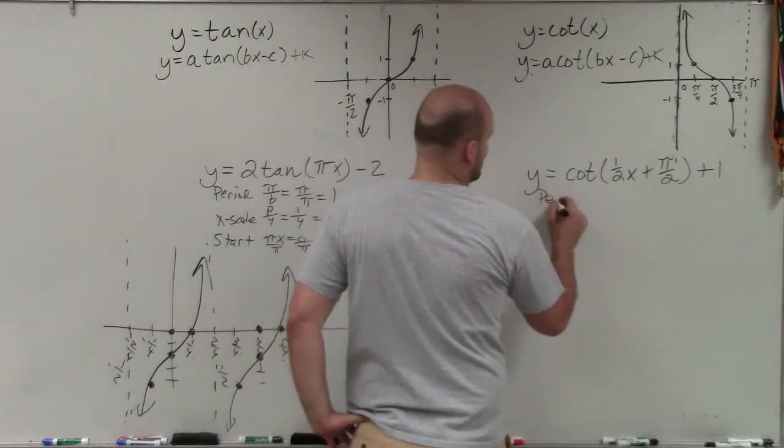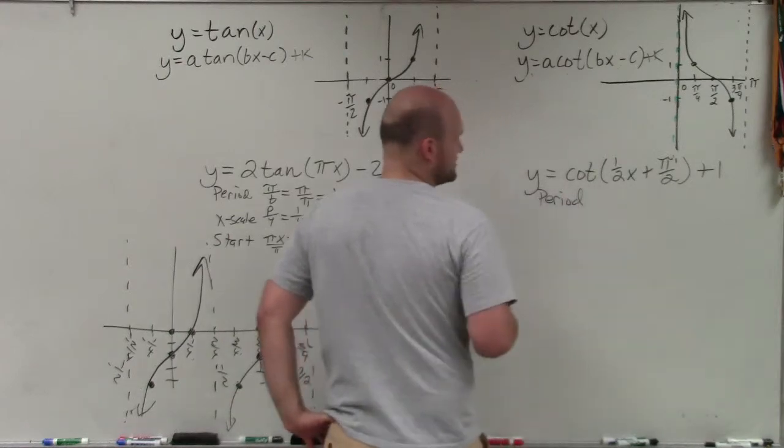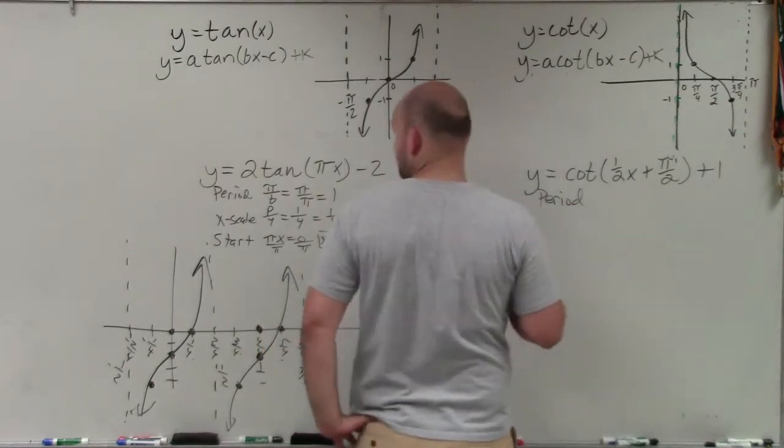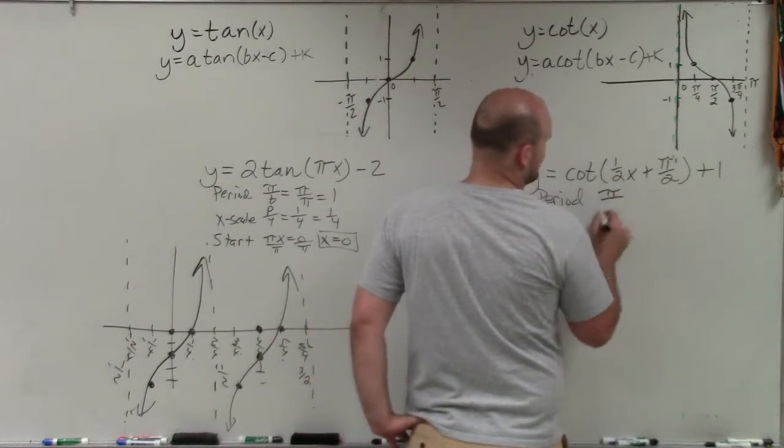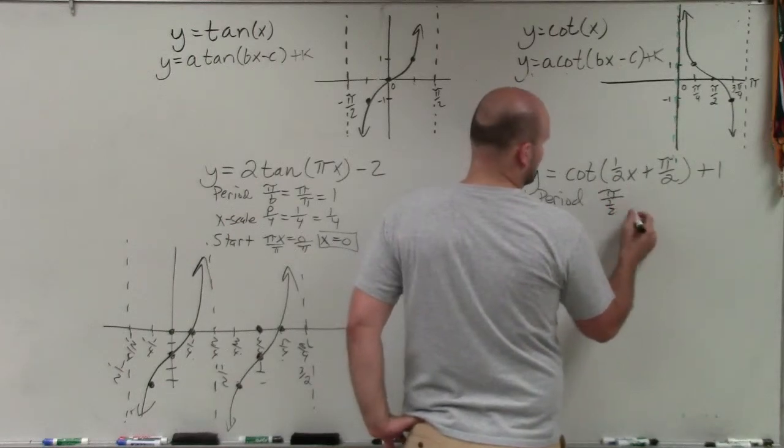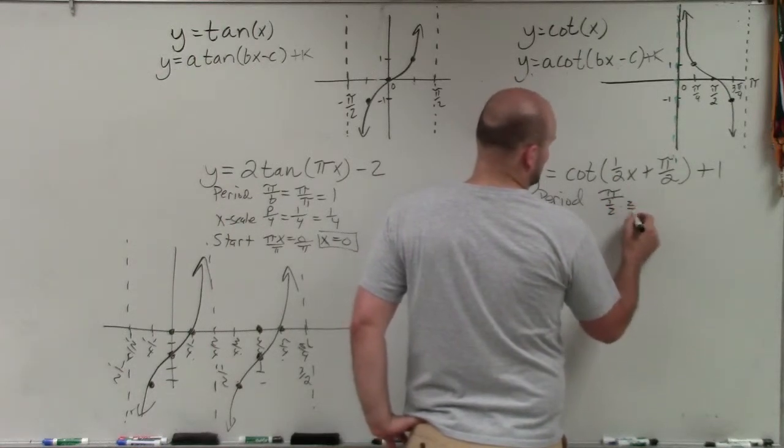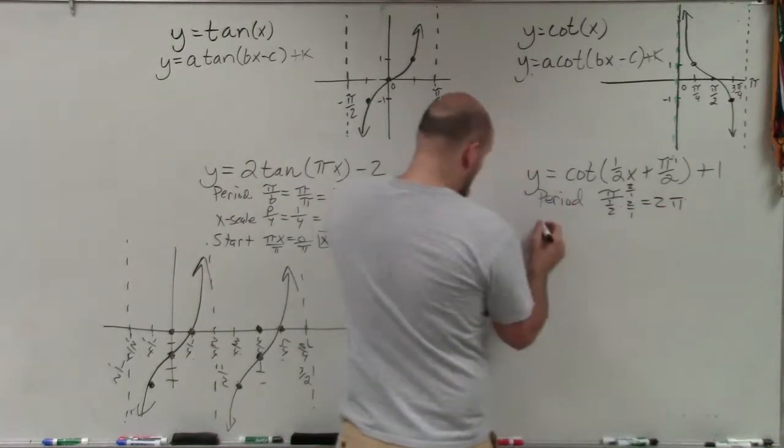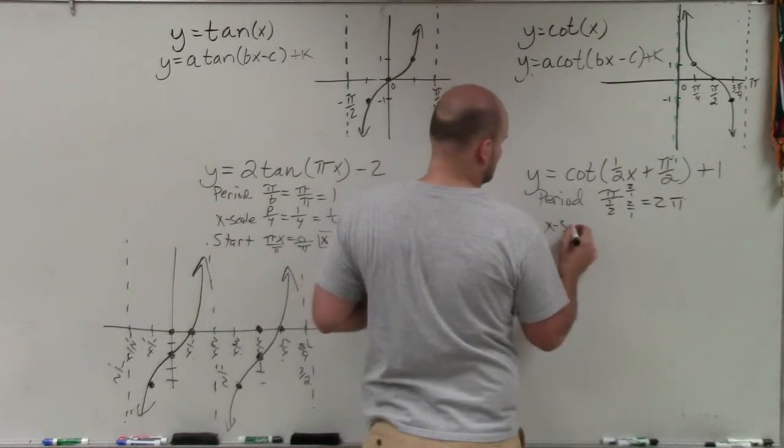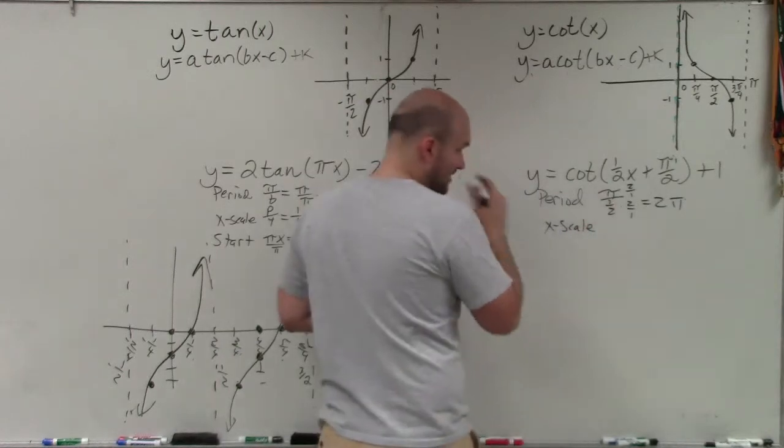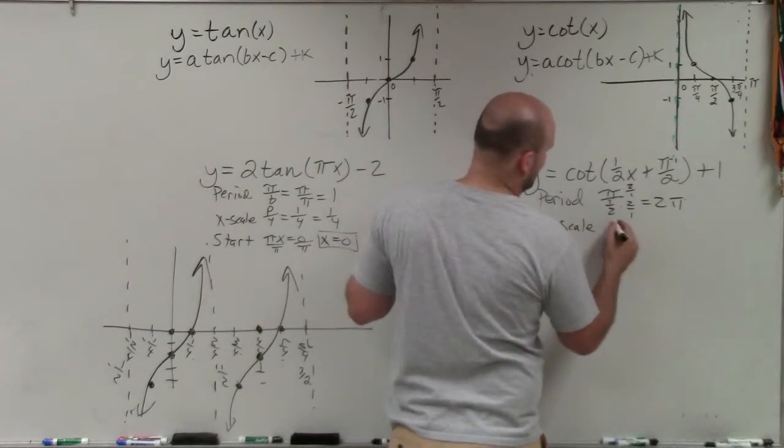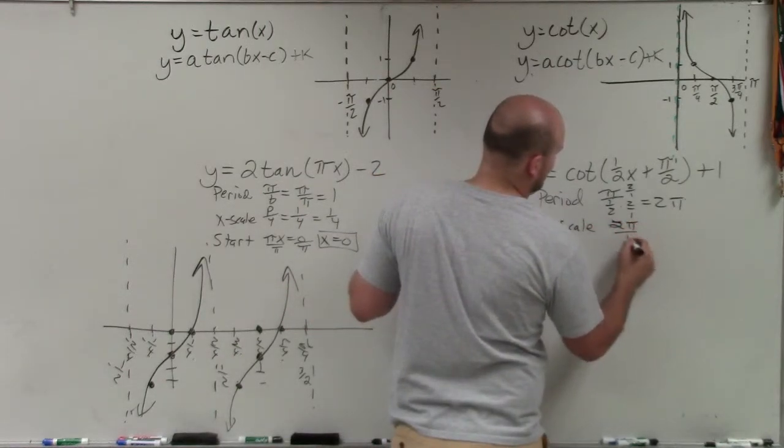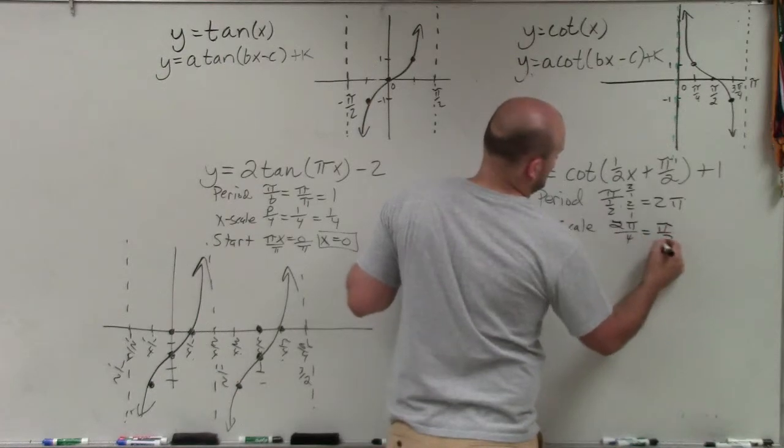So the first thing we want to do is determine our period. So our period is going to be π divided by our b, which is 1/2. So then you multiply by the reciprocal. So that becomes 2π. Our x scale is going to be our period divided by 4. So that's going to be 2π divided by 4, which is π/2.